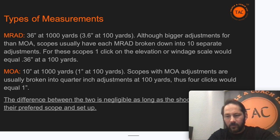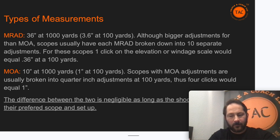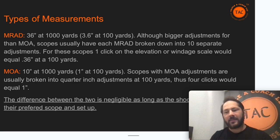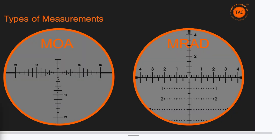How do we get 3.6 inches at 100 yards for one MRAD? One yard is about 91% of one meter. At one meter, one MRAD is 3.9-something inches. Take 91% of 3.9 and you get 3.6. Consequently, that's 36 inches at a thousand yards.